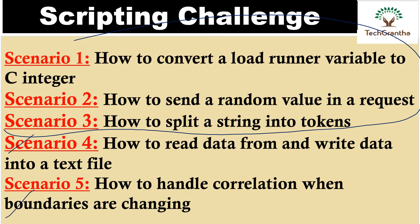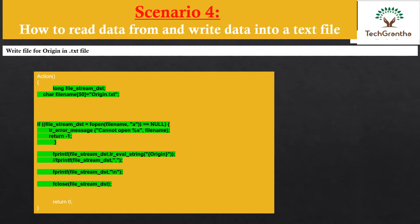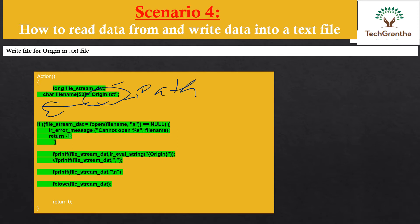Let's look at scenario number 4 first. The requirement in scenario number 4 is: how can we read data from a file and write it down in txt format? This is the basic approach. First, we initialize a file name variable using the data type long, then we provide the file name and the path of the txt file where we want to save the data.